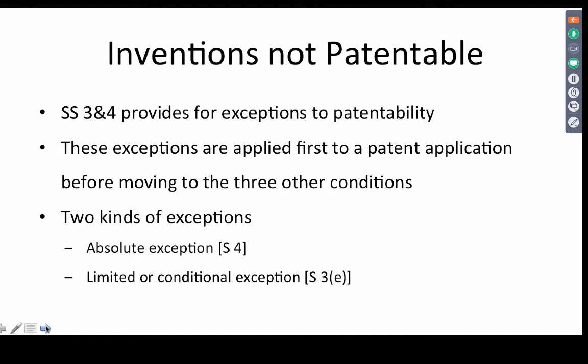Section 3(d) is another example of a conditional exception. Section 3(d) normally bars new forms of known substances — if you are using a new form of a known substance, you will not be granted a patent. But if you can demonstrate enhanced efficacy, you will be granted a patent. Again, an example of a conditional exception.